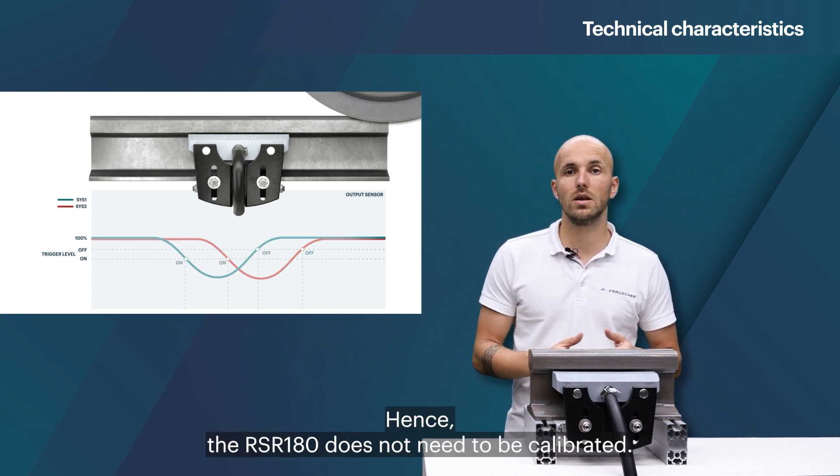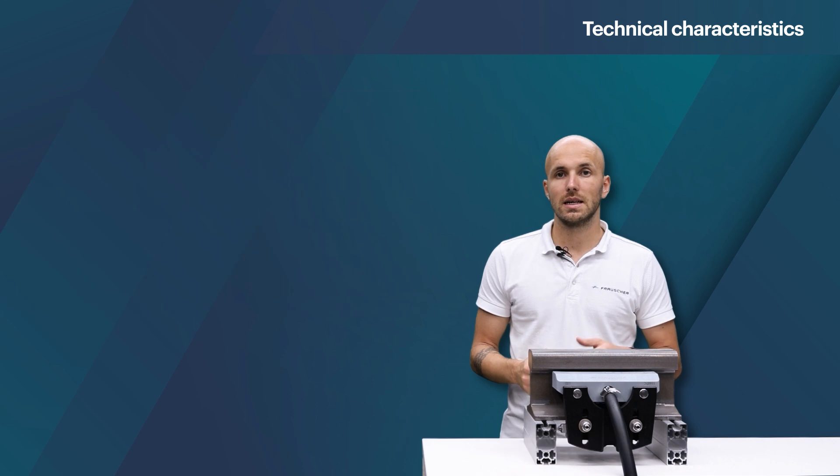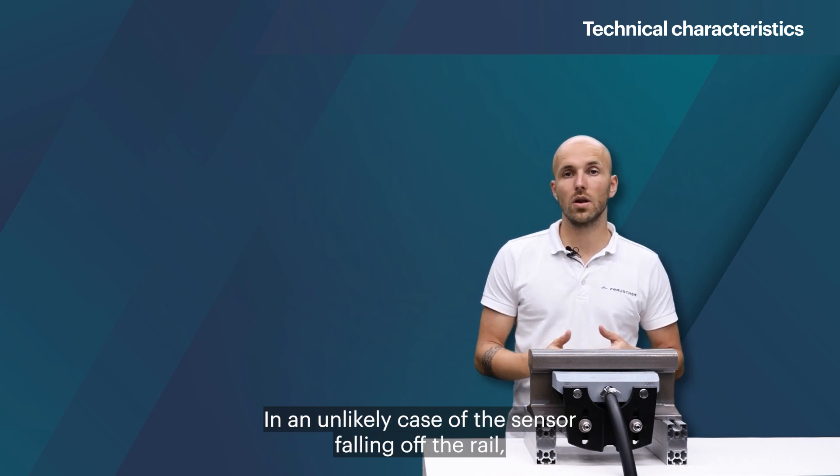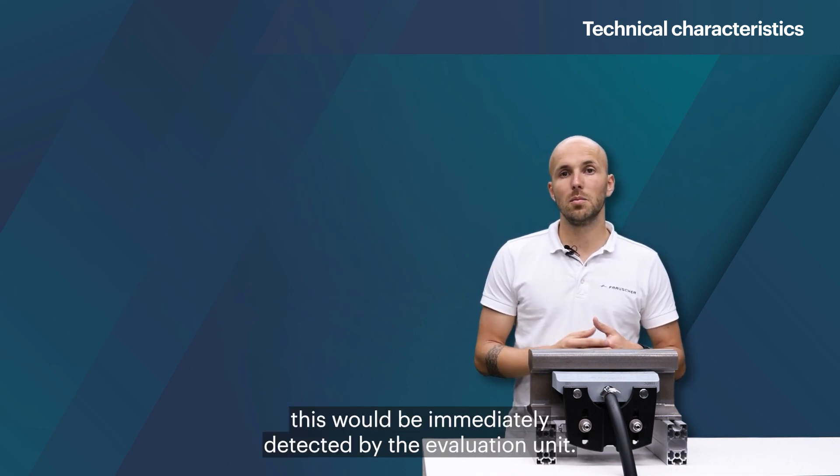Hence, the RSR 180 does not need to be calibrated. In an unlikely case of the sensor fallen off the rail, this would be immediately detected by the evaluation unit.